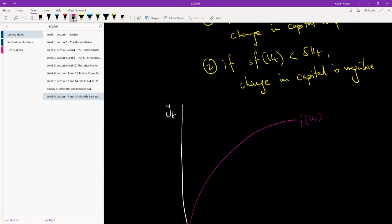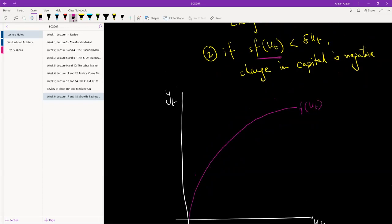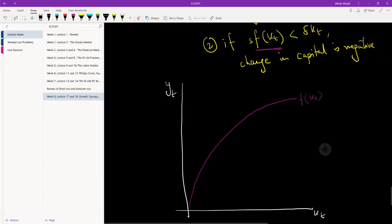And this was a function of kt. What we want to do now is draw a diagram for addition of capital. Notice that this is just this diagram that we have just drawn multiplied by small s, which is a fraction, which is a value between 0 and 1. So what we are going to see is this. And this is going to be the equation on top multiplied by s.